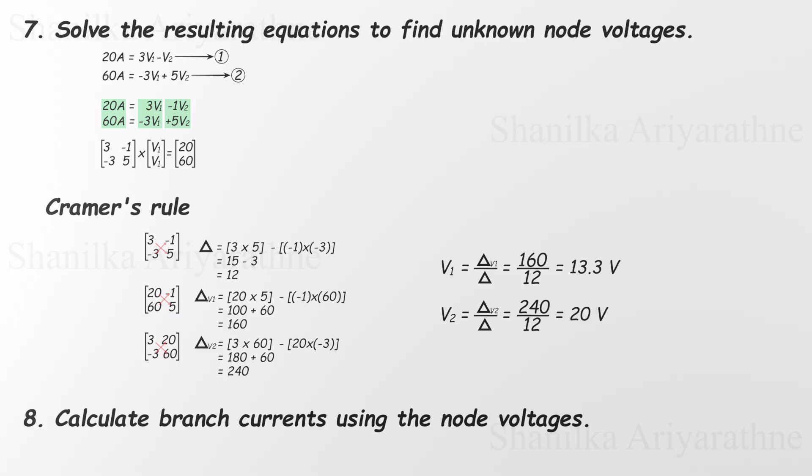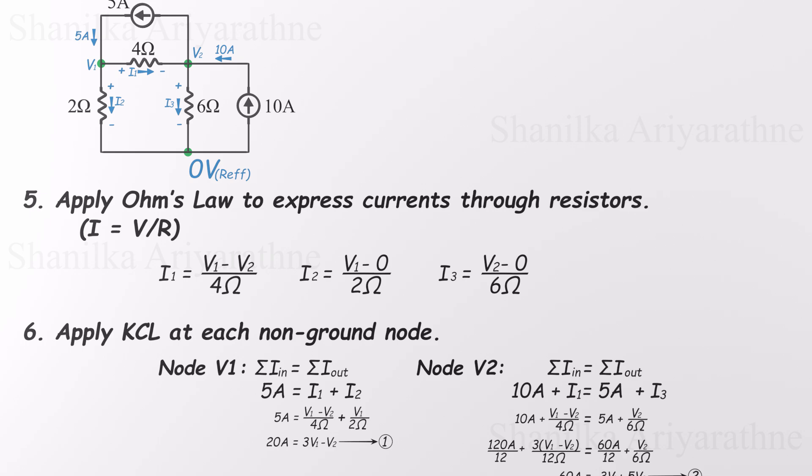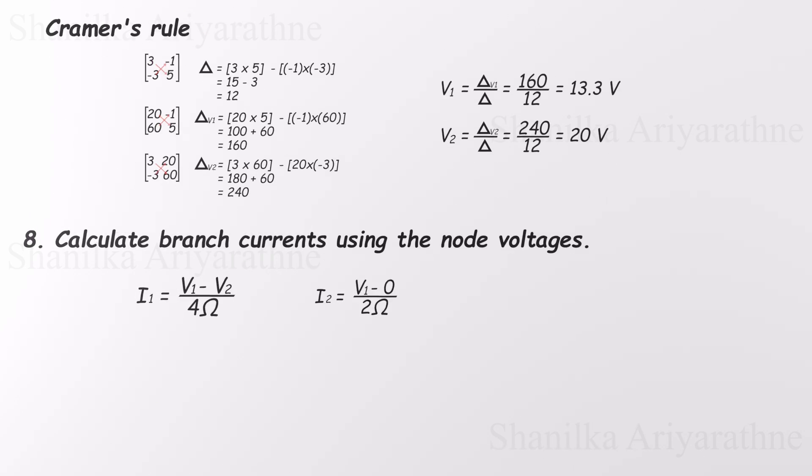Finally, now that we have the node voltages, we can use Ohm's law to calculate the branch currents. We just plug the values of V1 and V2 into the current formulas we set up earlier. For I1, after substituting the voltages, we get negative 1.67 amps. That negative sign simply means the actual current flows in the opposite direction from what we assumed.